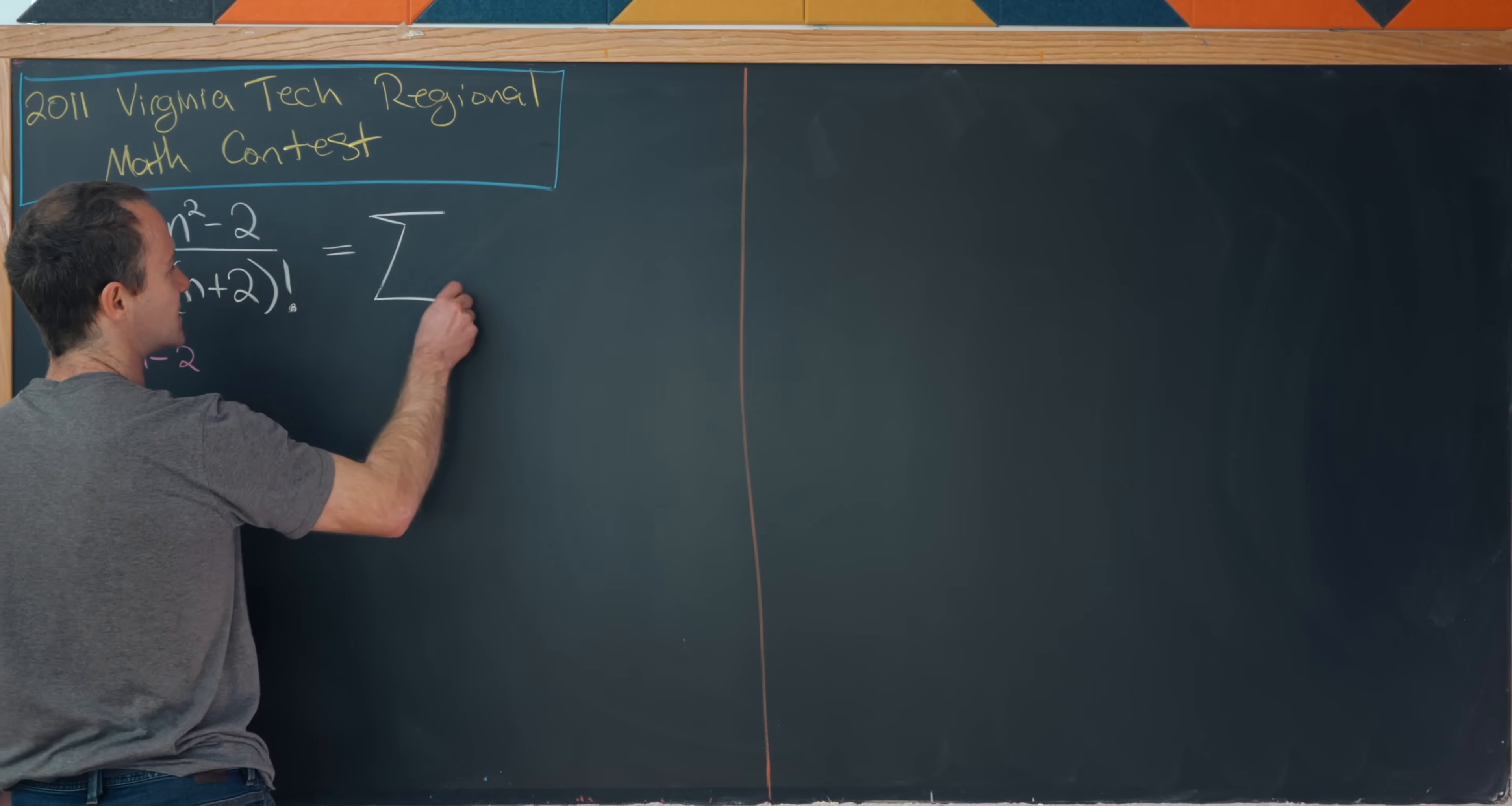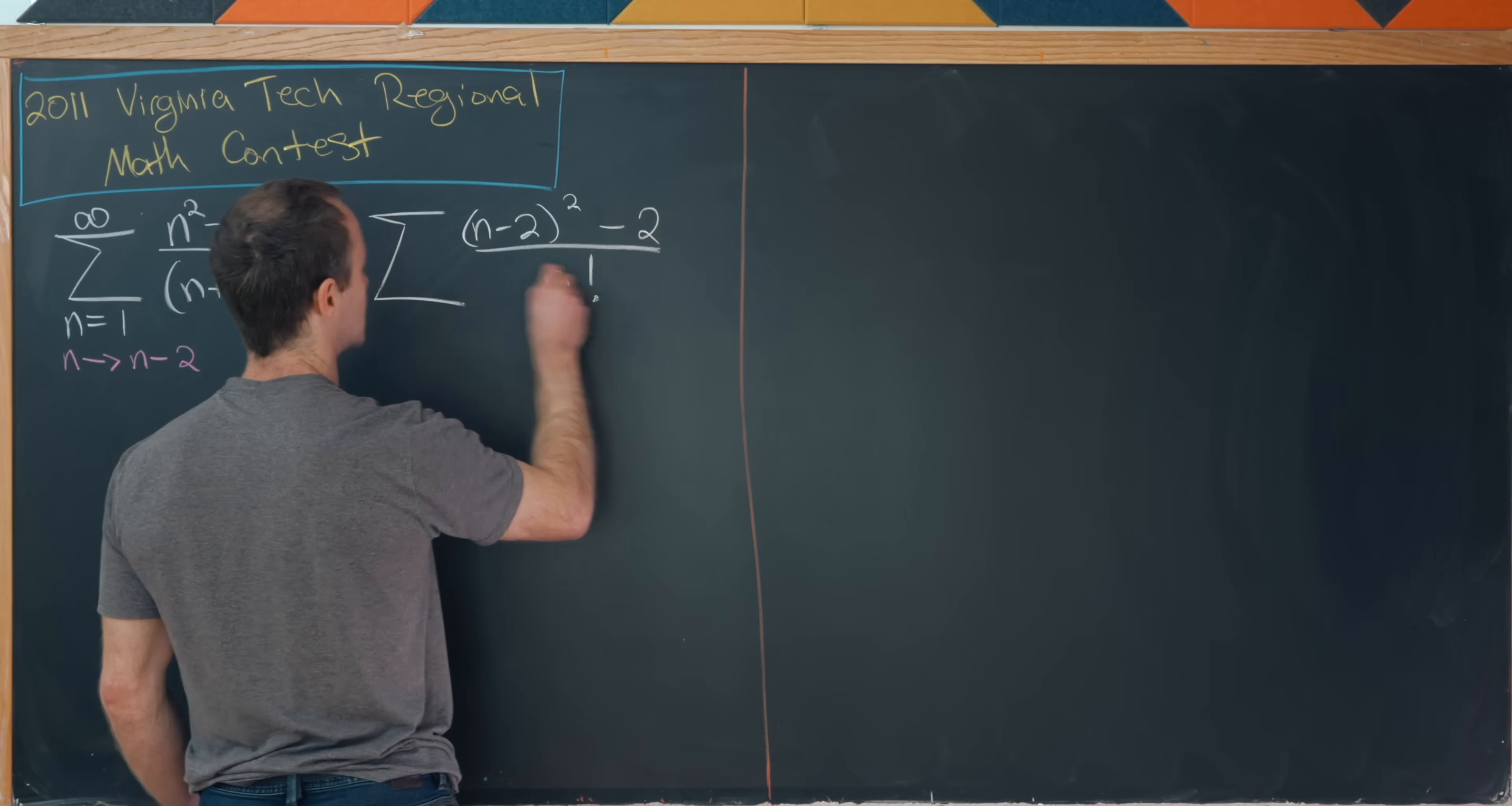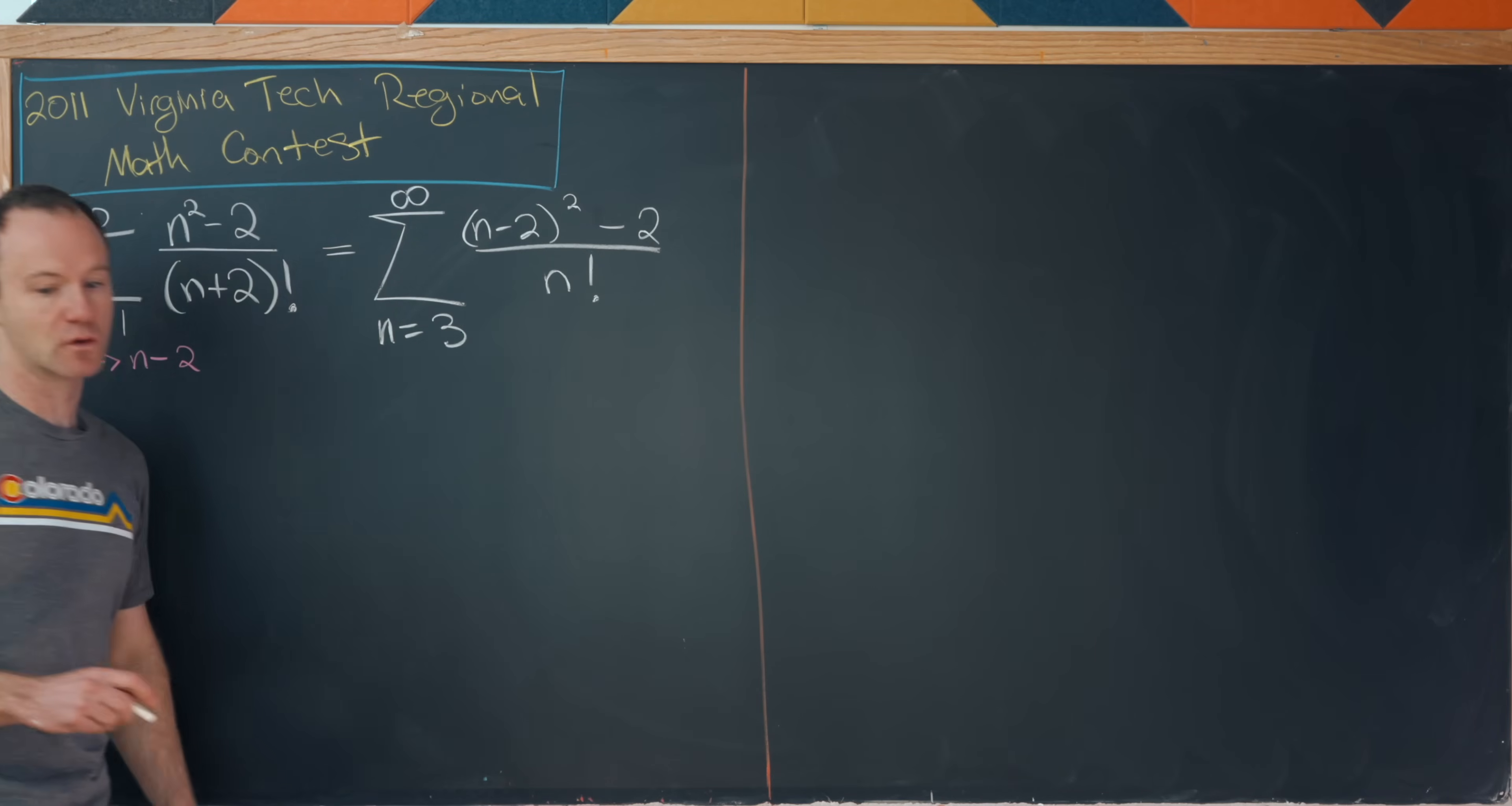So now we'll have the sum of n minus two quantity squared minus two over n factorial. The upper bound of that sum is still infinity, but we need to think about the lower bound. So notice when this new index n minus two is equal to one, then n is equal to three. So this in fact starts at n equals three.